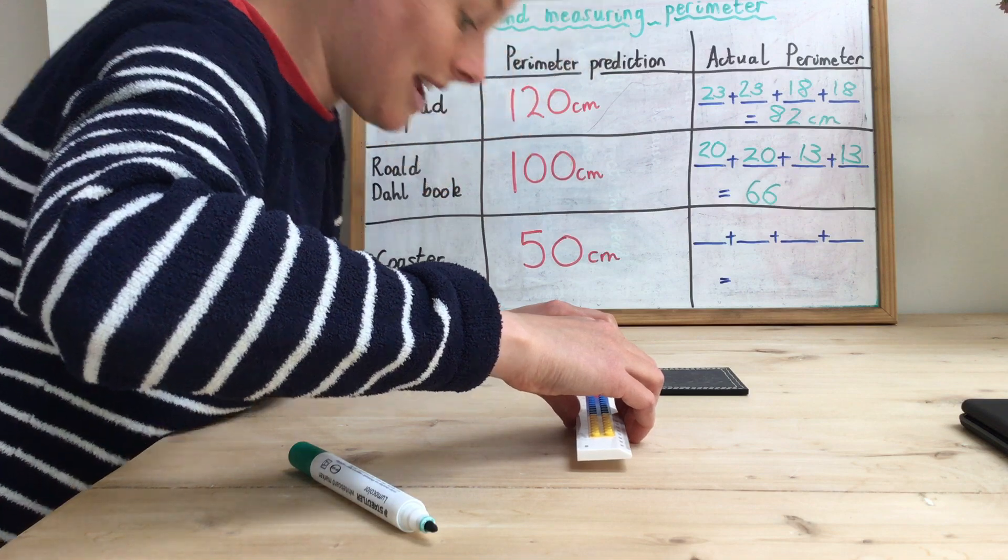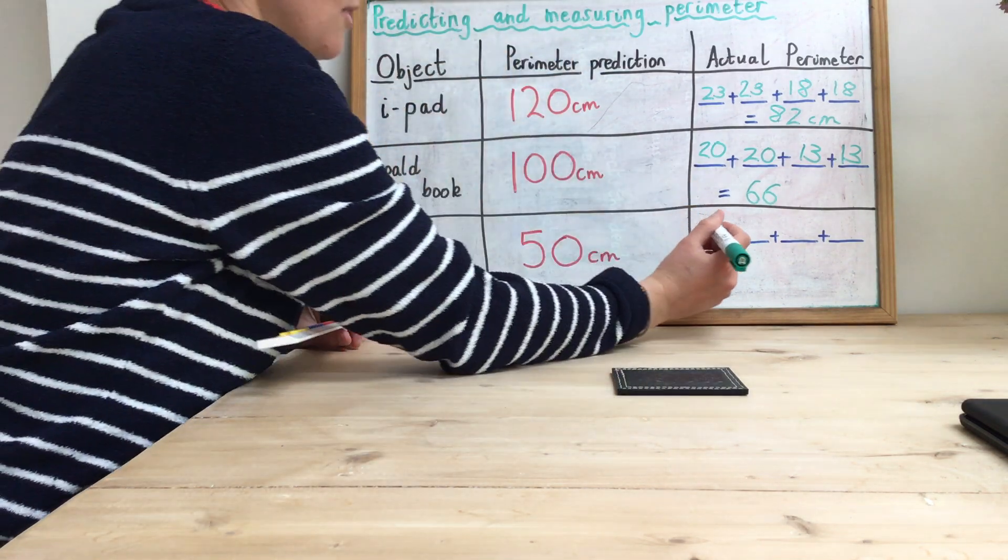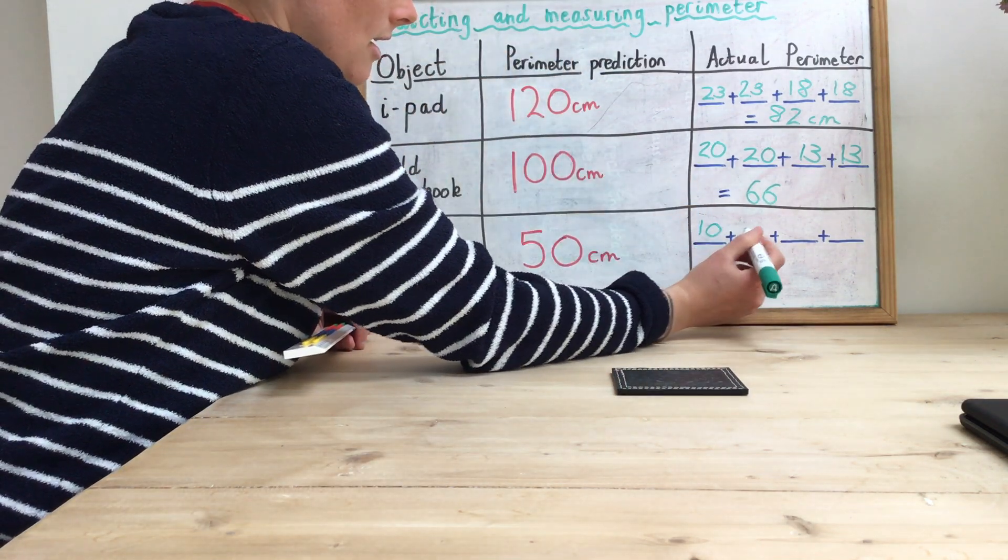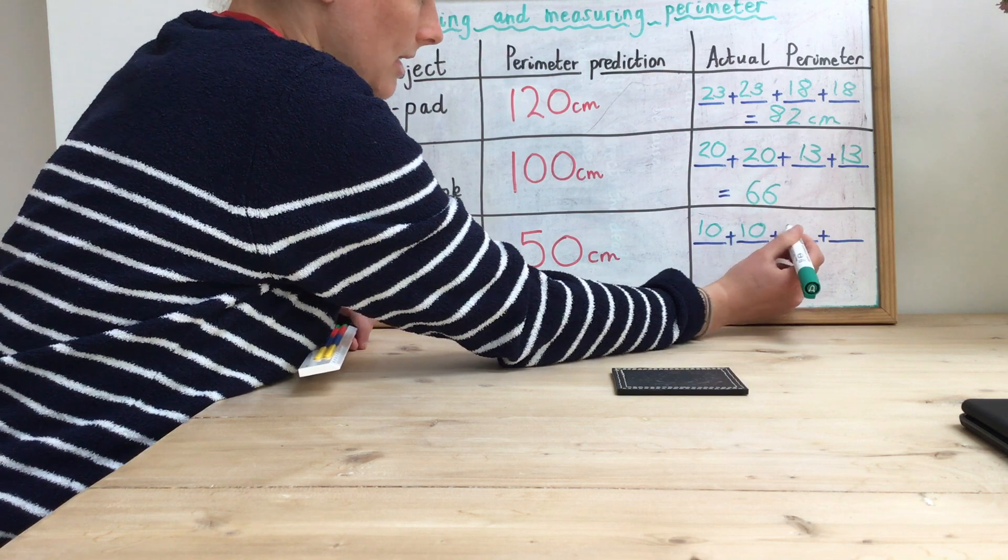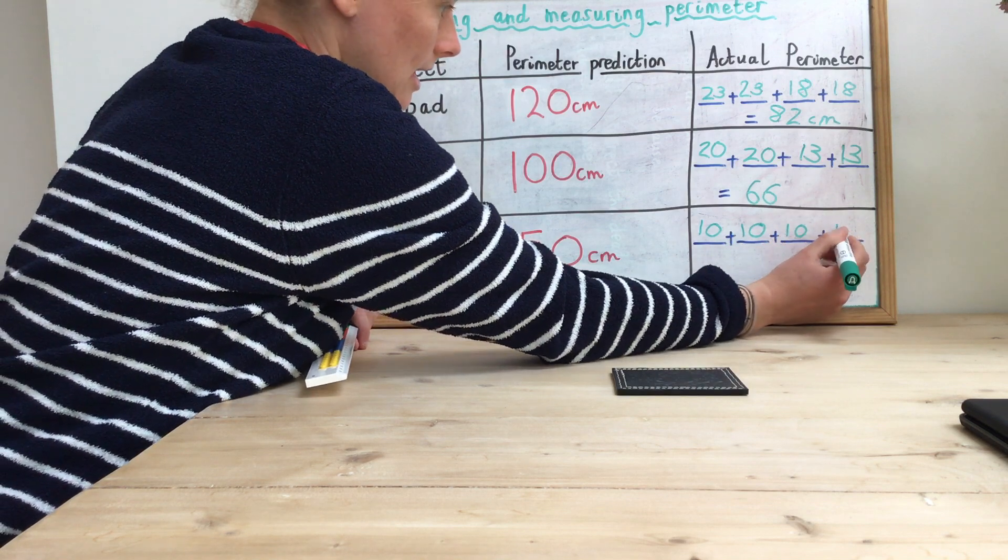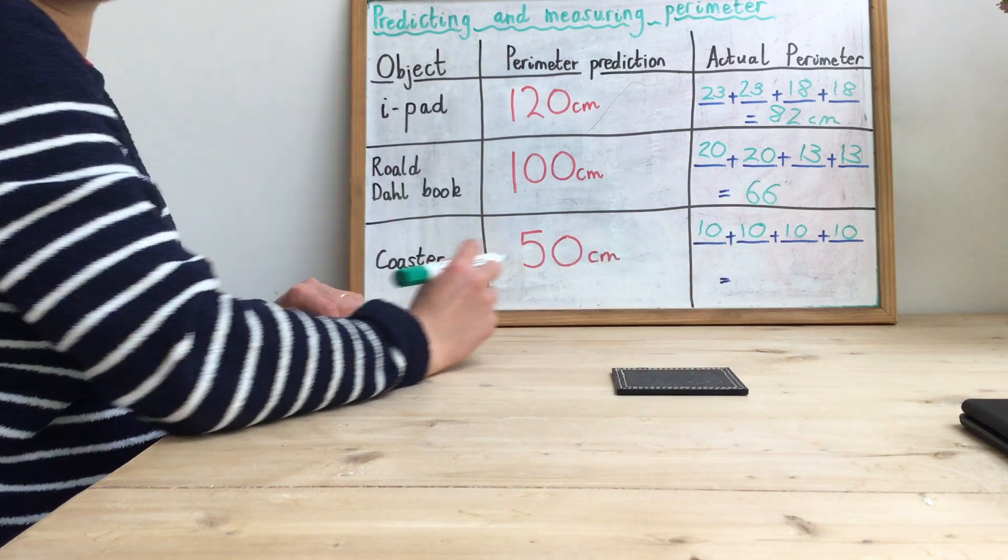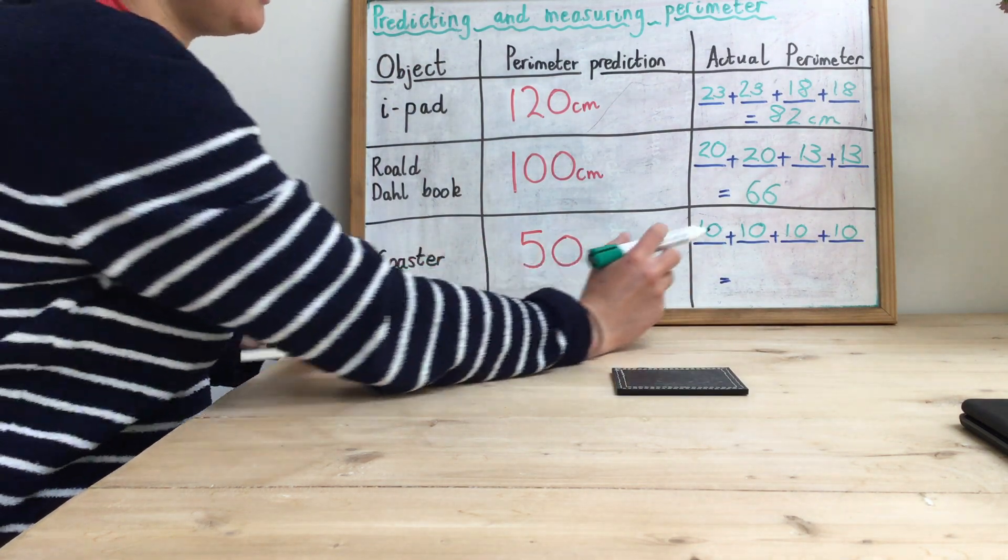So that is exactly 10 centimeters long. Because it's a square, I know that every single side will be 10 centimeters in length. If I add those up, definitely don't need to do column addition for this.